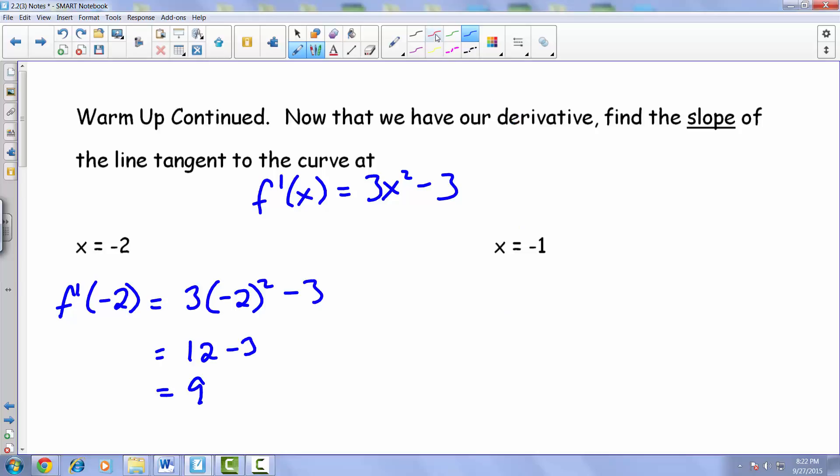When we try throwing negative 1 in, we end up with f prime of negative 1, which is just 3 times negative 1 squared minus 3. Negative 1 squared gives us positive 1 times 3 gives us 3 minus 3, which in the end just comes out to be 0.